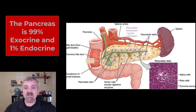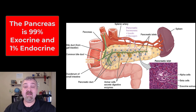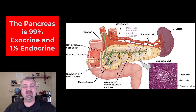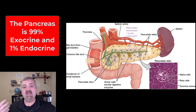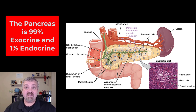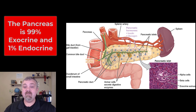When you think of the pancreas, you probably think of insulin, and that's totally fine. But 99% of the pancreas is actually exocrine in nature because it makes digestive enzymes and buffers that neutralize the acid coming from your stomach. So the huge majority of the pancreas is actually an exocrine structure.